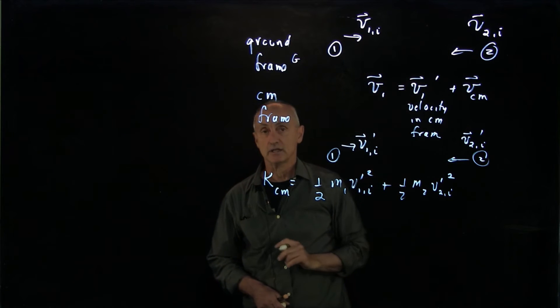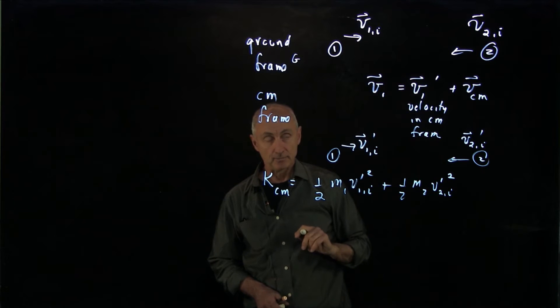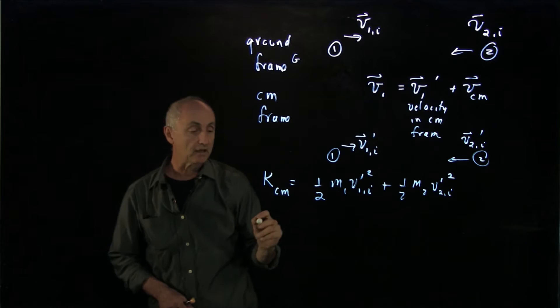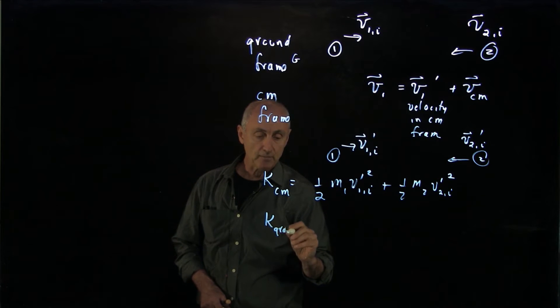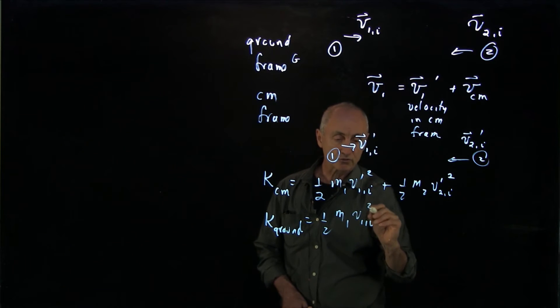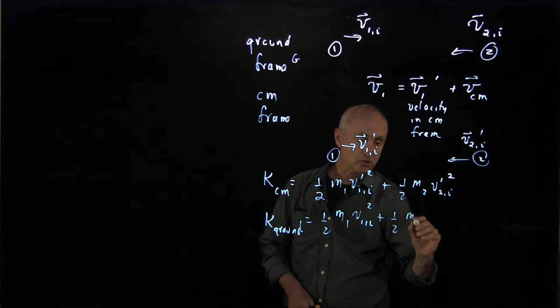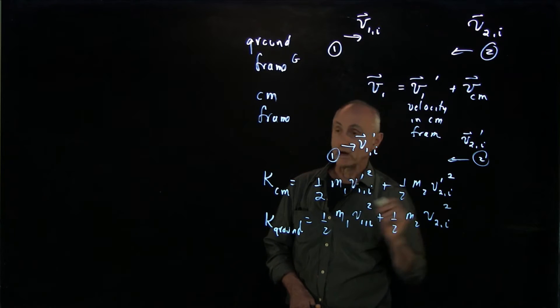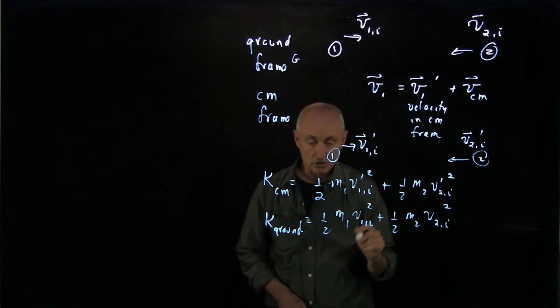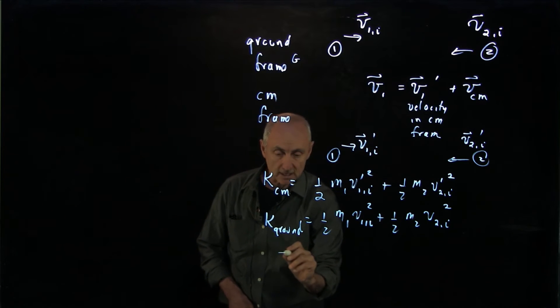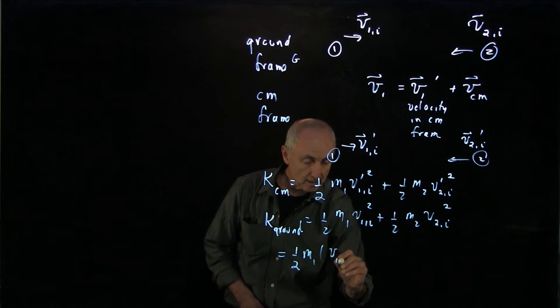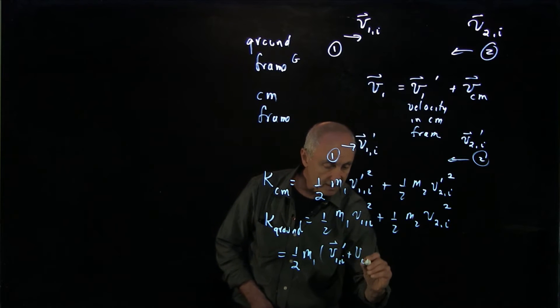How do we calculate the kinetic energy in the lab frame? Well, that's a little bit more complicated, and we'll need a little algebra to start that. So kinetic energy in the ground frame we know is 1 half m1 v1 initial squared, plus 1 half m2 v2 initial squared. Now what I have to do is use the velocity relationship. This is going to take a little bit of algebra. We have m1, I'll write v1 prime plus vcm.